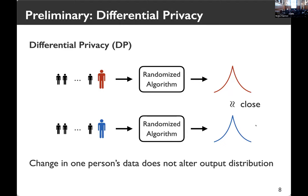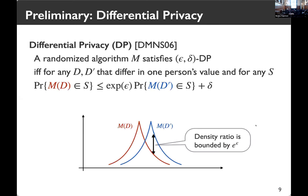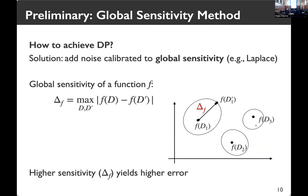Differential privacy essentially guarantees that changing one person's data doesn't alter the output distribution by much. The formal definition measures how close two distributions are using two parameters, epsilon and delta — smaller epsilon and smaller delta means better privacy. The standard way to achieve differential privacy is to add noise calibrated to what's called global sensitivity, which is the maximum difference between function outputs on neighboring datasets. We naturally observe that if the sensitivity is too high, the noise dominates the function output and the differentially private output becomes meaningless.